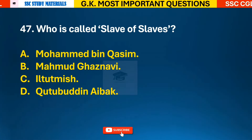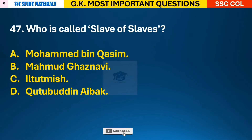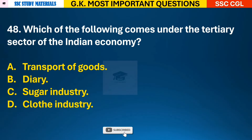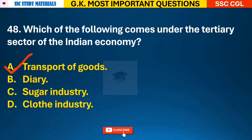Question 47: Who is called slave of slaves? Answer C - Iltutmish was known as slave of slaves. Question 48: Which of the following comes under the tertiary sector of the Indian economy? Answer A - transport of goods.